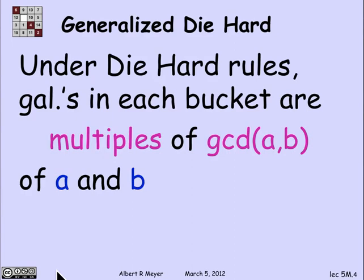The reason is that the GCD is a divisor of A and B — of course, it's a common divisor — and therefore it divides any linear combination of A and B. So any linear combination of A and B is a multiple of the GCD. And the GCD is itself a linear combination. So linear combinations of A and B are the same as multiples of the GCD. That gives us a pretty good understanding of what amounts we can get in the various buckets: we can only get multiples of the GCD.